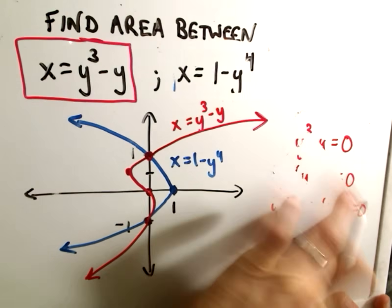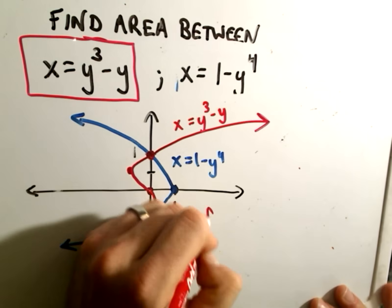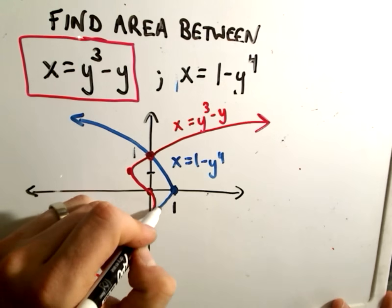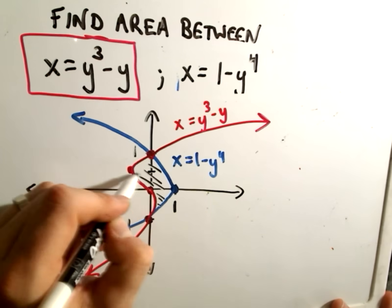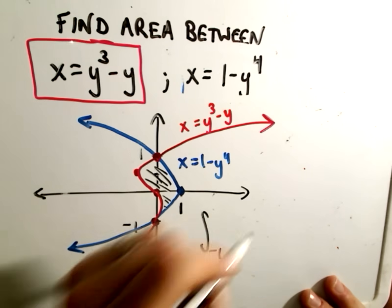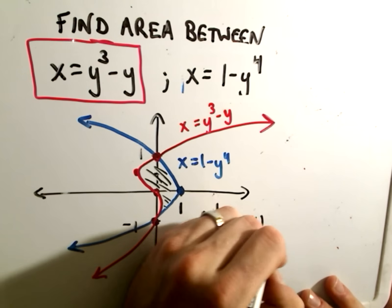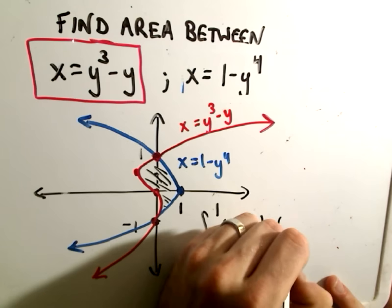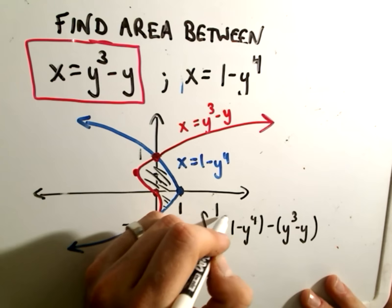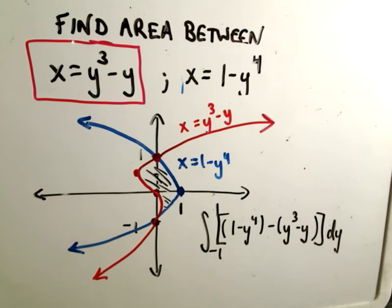So now we basically just have to set up our integral and go from there. So the idea is we use the smallest y-coordinate to the largest y-coordinate, which would be negative 1 to 1. And then we take the rightmost and subtract away the leftmost, which over this entire interval will be 1 minus y to the fourth minus y cubed minus y, all dy. And that'll be the setup on our integral now.